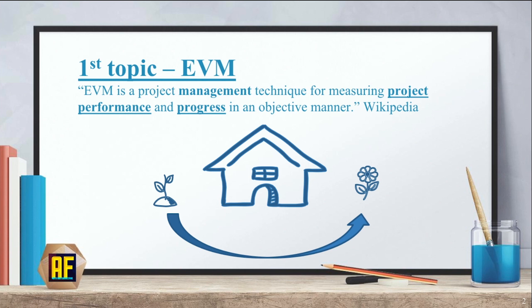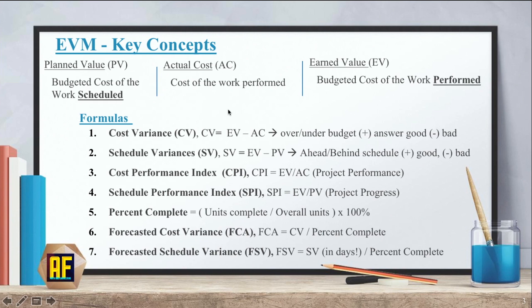Our first topic was the EVM, which is a project management technique for measuring project performance and progress in an objective manner. If you remember, we had these key concepts: the plan value, the actual cost, and the earned value. And we used these key values with the following formulas to calculate the cost variance, schedule variance, cost performance index, schedule performance index, percent complete, FCA and FSV.